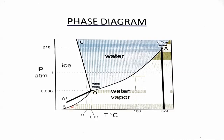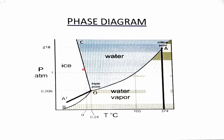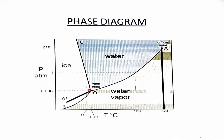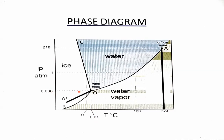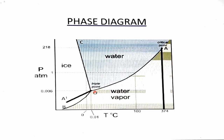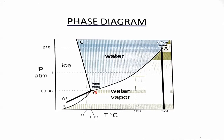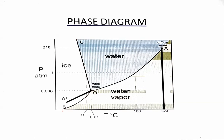Since two phases are in equilibrium at each curve, we can calculate the degree of freedom. The triple point is where all three phases — solid, liquid, and water vapors — are in equilibrium. At the triple point, the temperature is 0.01°C. We calculate degree of freedom using the formula F = C − P + 2.